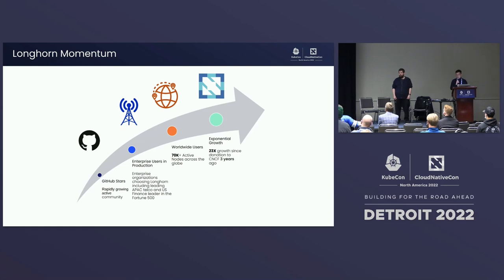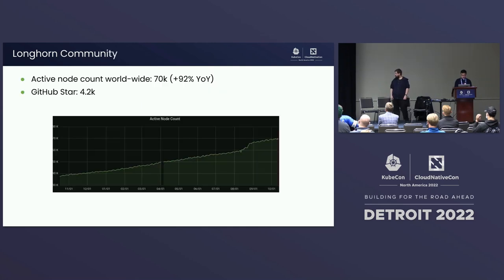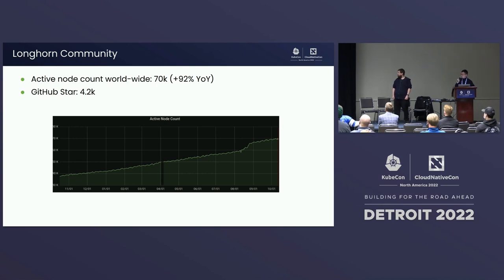Comparing with three years ago when we donated to CNCF, Longhorn has grown 23 times. This metric was collected around mid-October. On a year-over-year basis, it grows about 92%.